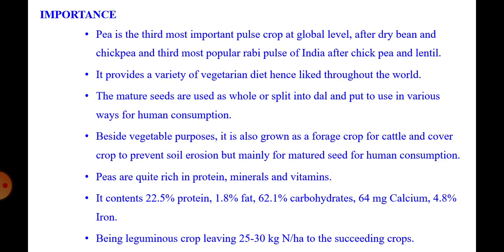Before going towards this package of practices, we will cover the importance of this crop. Pea is one of the most important and third important pulse crop at global level after dry bean and chickpea, and the third most popular rabi pulse crop in India after chickpea and lentil. It provides a variety of vegetarian diet throughout the world. Mature seeds are used as whole or split into dal in various ways for human consumption. Besides vegetable purpose, it is also grown as a forage crop for cattle and a cover crop to prevent soil erosion.